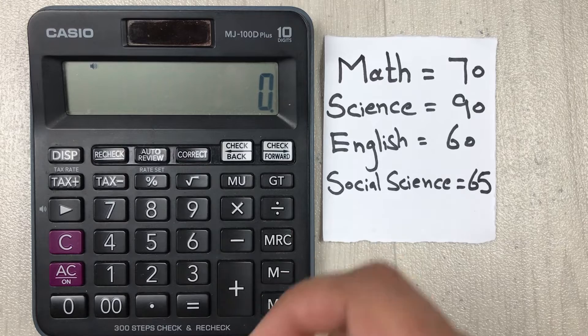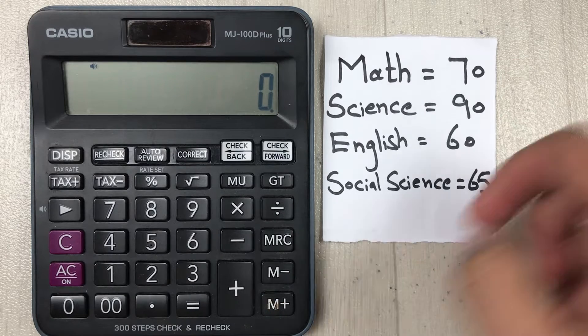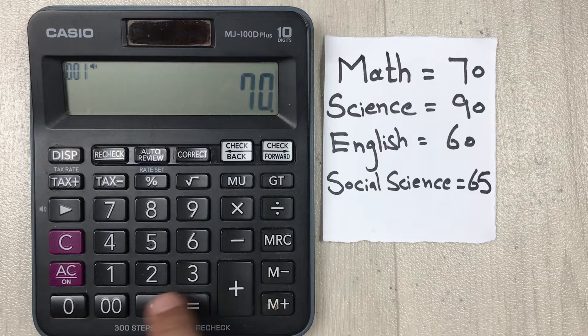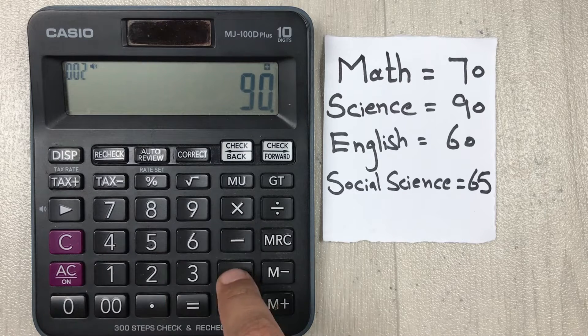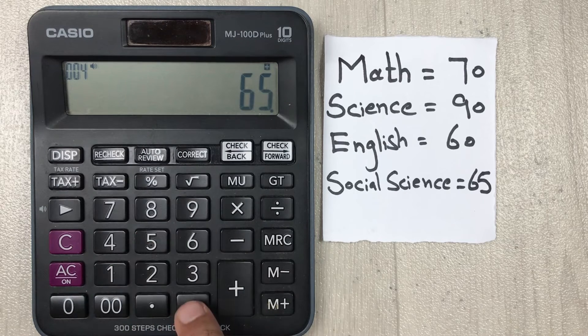So in the first step we will add these marks. So 70 plus 90 plus 60 plus 65, then we press the equal button.